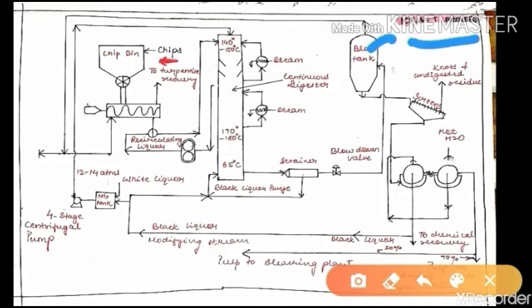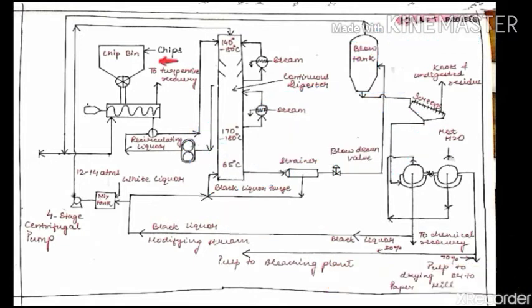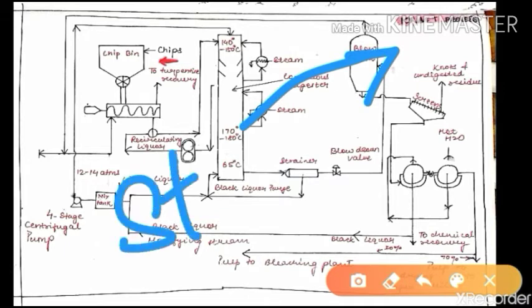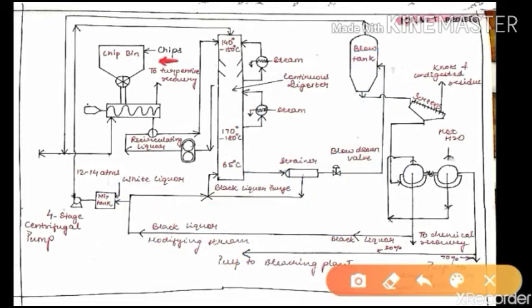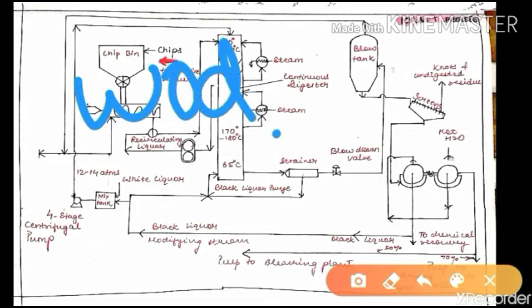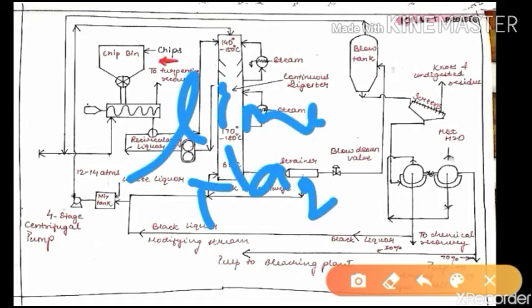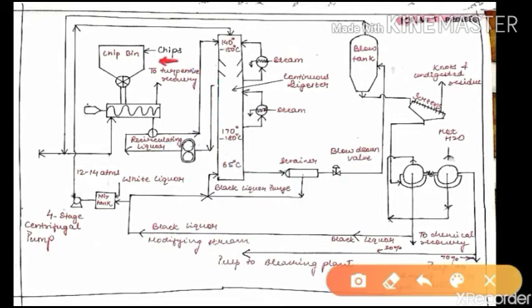The basic process for the manufacture of pulp is known as the Kraft process. Don't mistake the word — Kraft is a German word and it means strength, so the paper made is very strong. It is also called the sulfate Kraft process because sulfate is used in this process. The basic raw material for the manufacture of pulp is wood or bamboo, and the chemicals required include lime, sodium sulfate (Na2SO4).